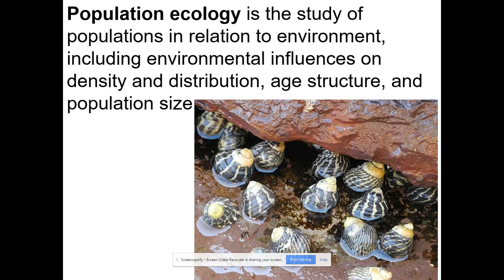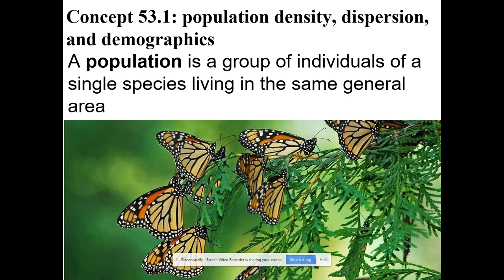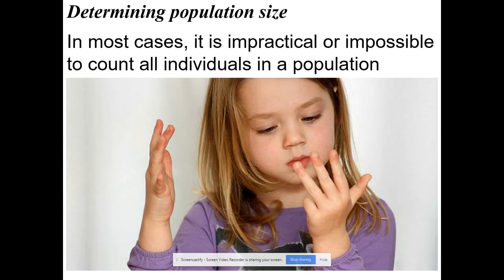In population ecology, we're going to look at what is a population, density of populations, distribution, age structure, and population size. A population is a group of organisms of one species living in the same general area at the same time. Here is a small population of snails, and here is a population of butterflies living in a certain area at a certain time.